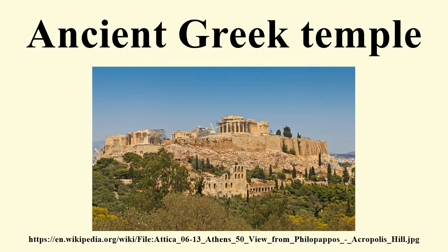The construction of temples was usually organized and financed by cities or by the administrations of sanctuaries. Private individuals, especially Hellenistic rulers, could also sponsor such buildings. In the late Hellenistic period, decreasing financial wealth, along with the progressive incorporation of the Greek world within the Roman state, whose officials and rulers took over as sponsors, led to the end of Greek temple construction. New temples now belonged to the tradition of Roman architecture, which, in spite of the Greek influence on it, aimed for different goals and followed different aesthetic principles.